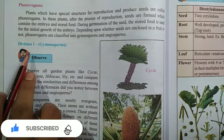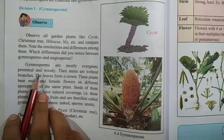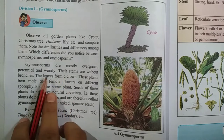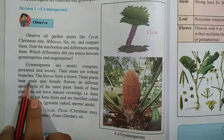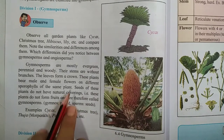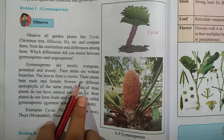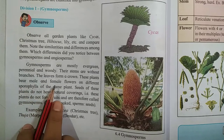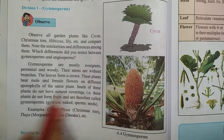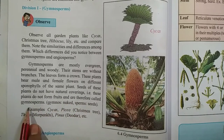In Phanerogams, the first division is Gymnosperms. Gymnosperms are mostly evergreen, perennial and woody. These plants are always evergreen and have a woody structure. Their stems are without branches — these plants don't have branches. The leaves form a crown. These plants bear male and female flowers on the different sporophylls of the same plant. Seeds of these plants do not have a natural covering; that is, these plants do not form fruit and are therefore called Gymnosperms.